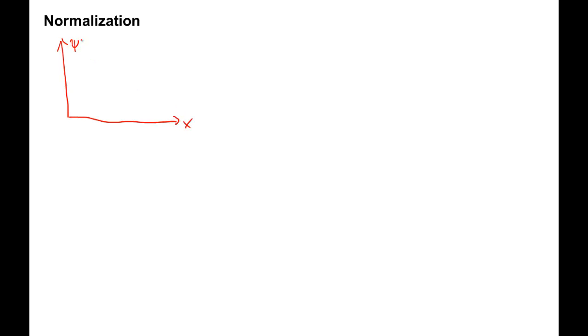According to the statistical interpretation of a wave function, psi star psi is a probability density. Integrating this intensity, which is always positive and zero, over a spatial region between a and b, gives the probability of finding the particle in this region.